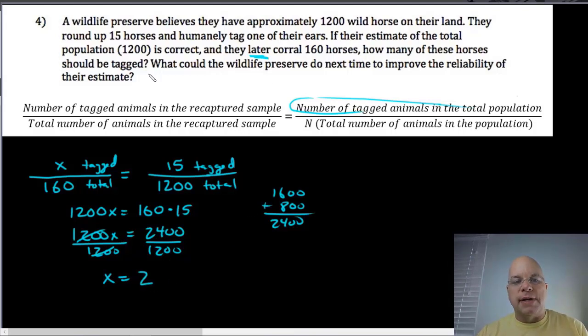So the answer to the first question, how many of these horses should be tagged, answer is 2 horses. The second question, what could the wildlife preserve do next time to improve the reliability of their estimate? That question implies that there's something wrong with the reliability of their estimate using their current method. If you think about their current method, they think they have 1200 horses, they tagged 15 and sent them back out into the population.